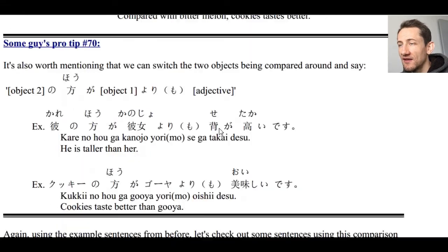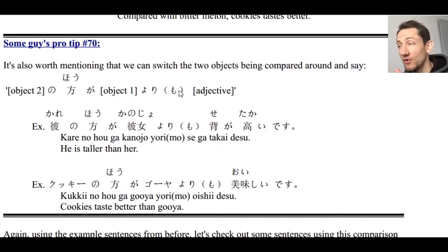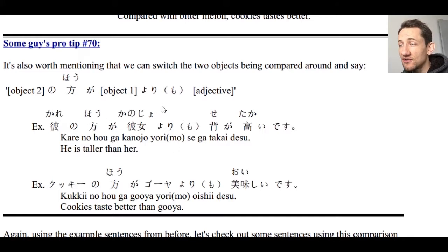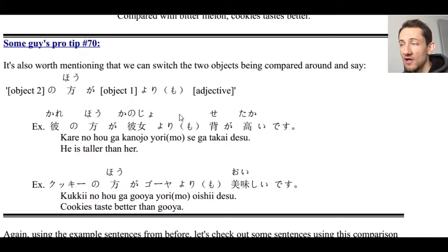It's worth noting that we can switch the objects around. Object two no hou ga, object one yori mo, adjective — that's perfectly fine. So you can say kare no hou ga kanojo yori mo seiga takai, or kukki no hou ga goya yori mo oishii desu. Both kanojo yori mo kare no hou ga seiga takai and kare no hou ga kanojo yori mo seiga takai desu are perfectly fine — however you want to do it.